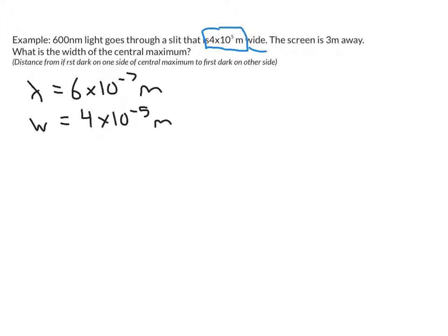4 times 10 to the negative 5 meters wide, it would never be a positive 5. So that should read 4 times 10 to the negative 5 meters. The screen is 3 meters away, that's our L value.